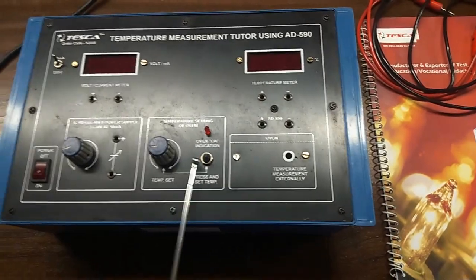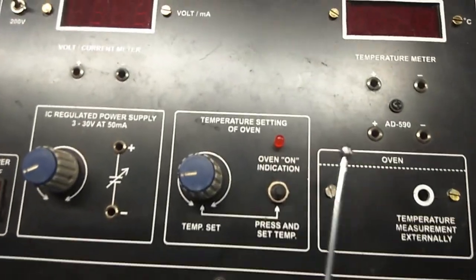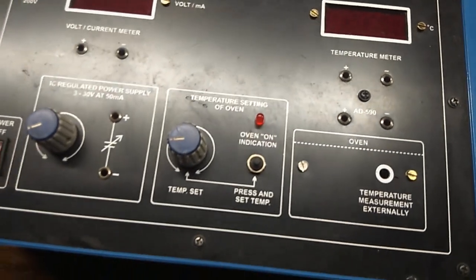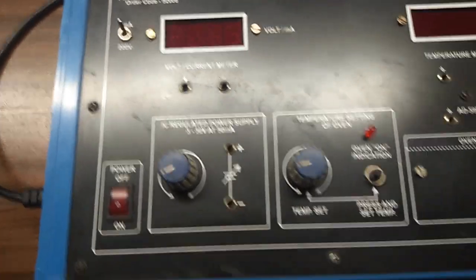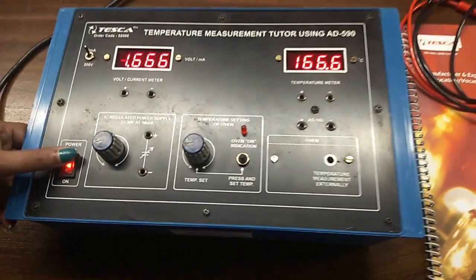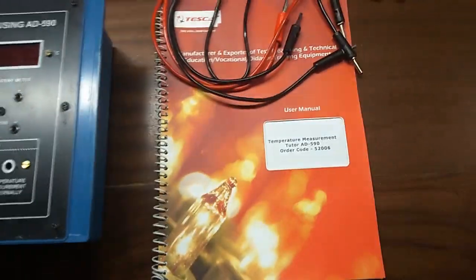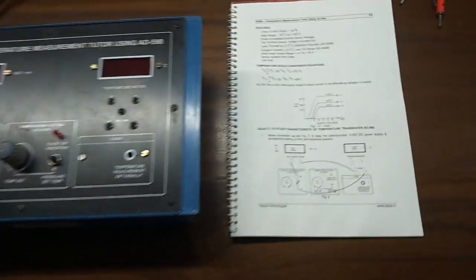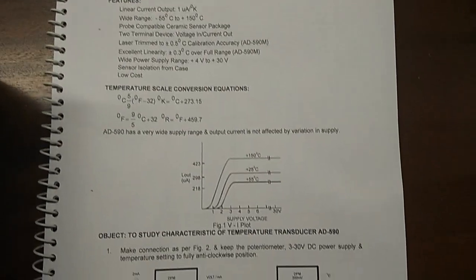This is the temperature setting of the oven. When the LED is on it indicates that the oven is on. This is IC regulated power supply, 3 to 30 volts at 50 milliampere. This is the main switch to turn on or off the kit. User manual and patch cords are all included in this kit. Our objective is to study the characteristics of temperature transducer AD-590.